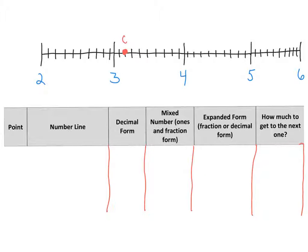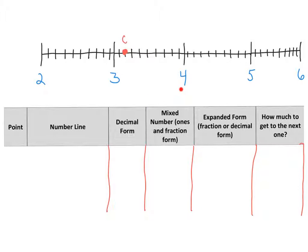With our first example tonight, we have point C here on a number line starting with a whole number of two. We are going to look at point C and use this number line to find what decimal number is at this spot. We'll make our mixed number, because remember these are the same things — they just look different. Then we'll write it in expanded form, and the question is how much do we have to add to get to the next whole? We can see that point C is between the whole numbers three and four. It's not quite close to four, but it's a little after three.